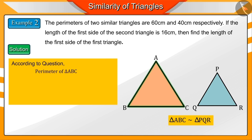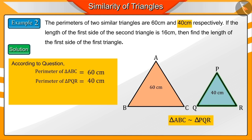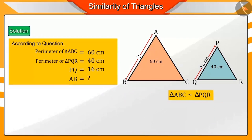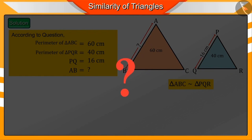From the given question, the perimeter of triangle ABC is 60 cm and the perimeter of triangle PQR is 40 cm. We also know that the first side of the second triangle, that is the length of PQ, is 16 cm. We need to find the length of side AB of the first triangle. Can you tell me how to find this out?